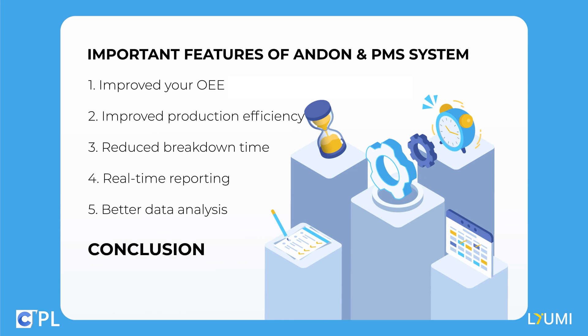In conclusion, the Undawn system is a crucial tool in the manufacturing industry that helps reduce downtime, increase productivity, and maintain quality control. With its seamless integration into the production process, the Undawn system ensures that issues are resolved quickly and efficiently, ensuring that the manufacturing process runs smoothly every time.